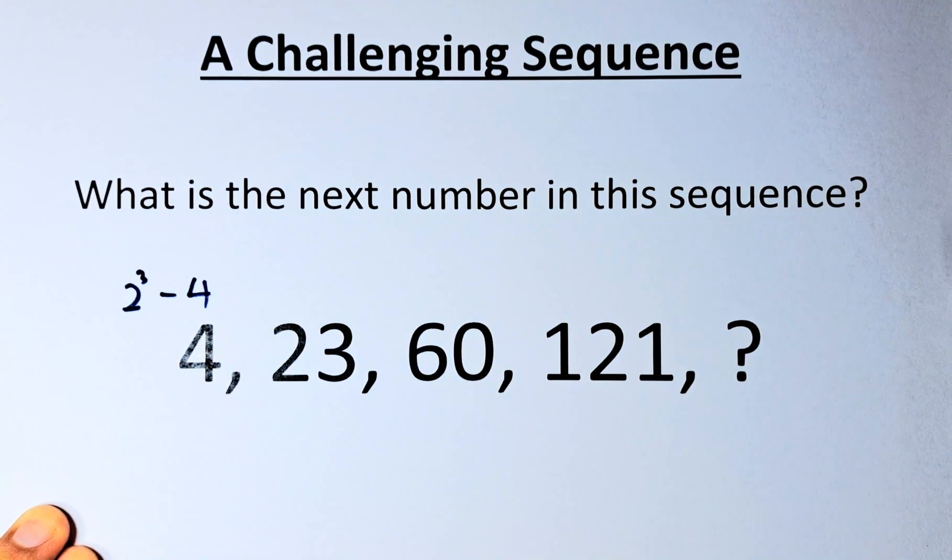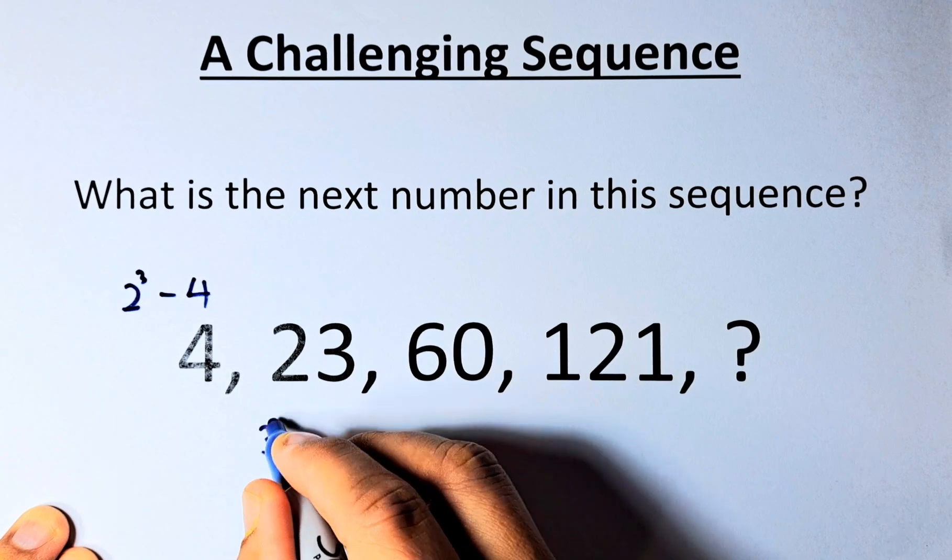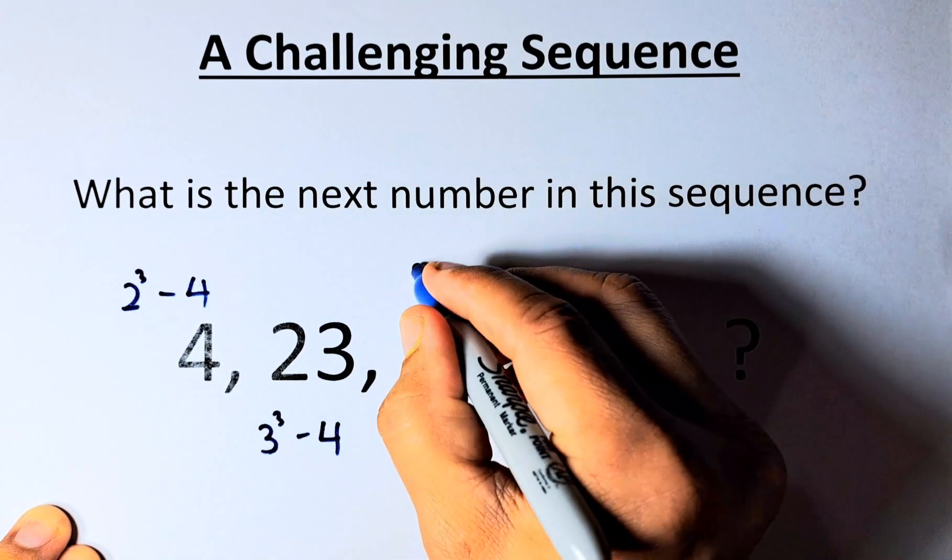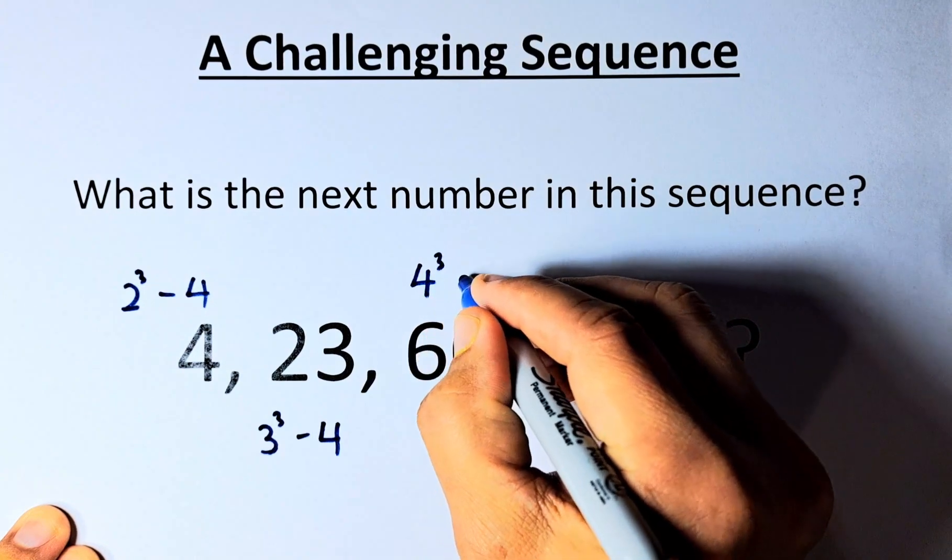So what is 23? 23 is going to be 3 cubed minus 4. You can see the pattern. So 3 cubed is 27, 27 minus 4 is 23. So 60 is going to be 4 cubed minus 4.